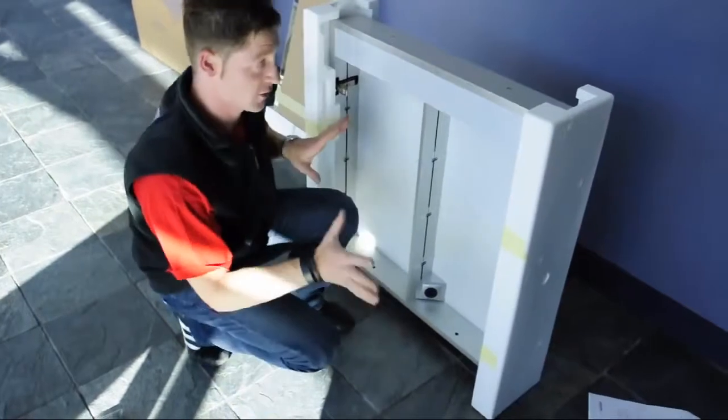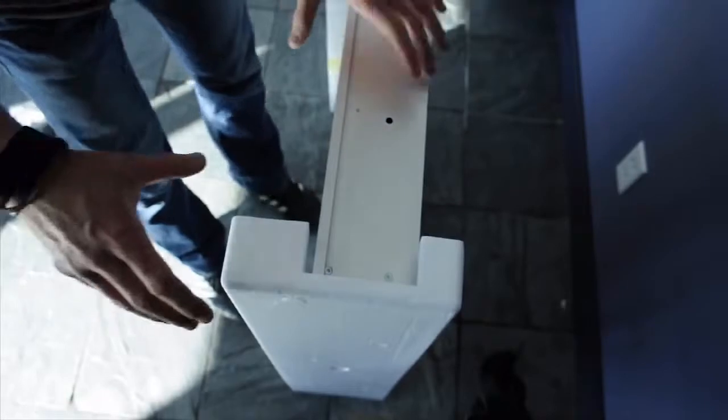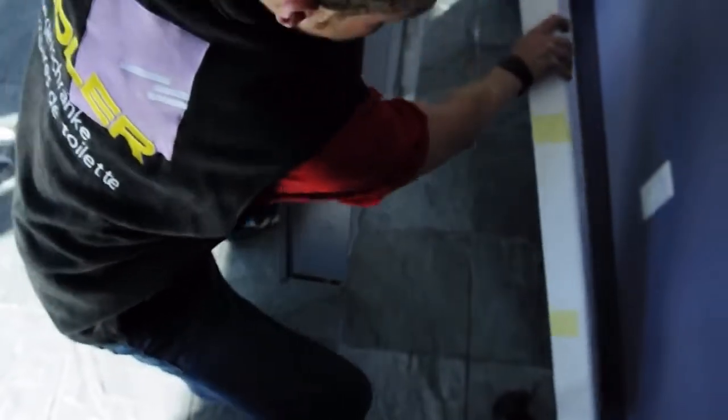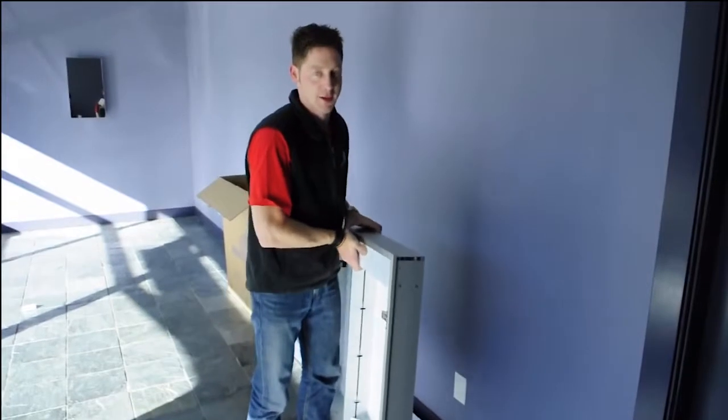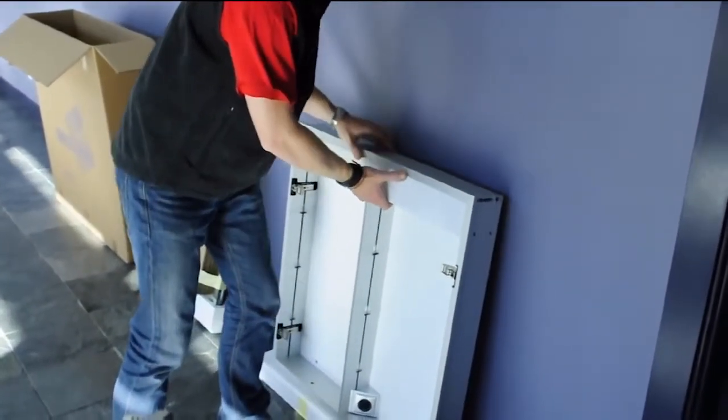Let's take off the styrofoam from the side and lean the cabinet against the wall. The best thing is when we take the styrofoam off is to place one on the bottom. Then we can place the cabinet on the styrofoam and everything is fine.